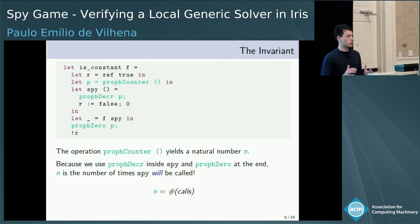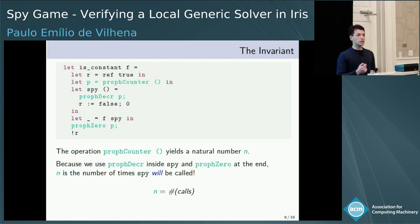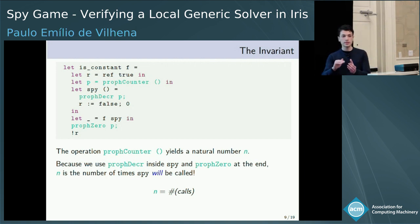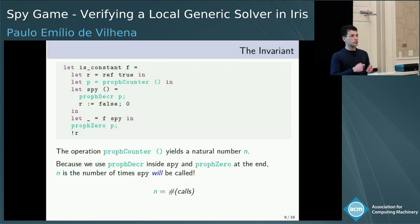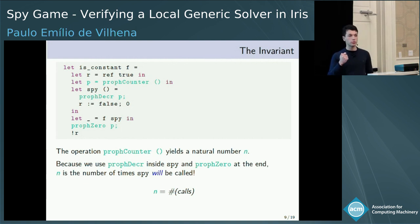Since this is ghost code, we have to instrument our code with these three operations. In the beginning of the code, we learn how many times the prophecy counter will be called. By placing the prophecy call inside the body of spy, the number of times the prophecy counter is called matches the number of times spy is called. So from the beginning of execution, we know how many times spy will be called, denoted by the natural number n.